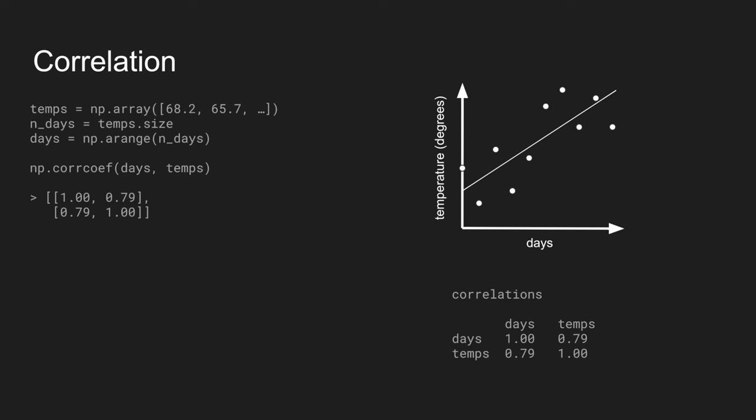It's a symmetric operation. So, the upper right-hand triangle on this square will be the same as the lower right-hand triangle. Days versus temps is the same as temps versus days. In addition, the correlation of anything with itself is 1. So, the diagonal will be 1's all the way down.